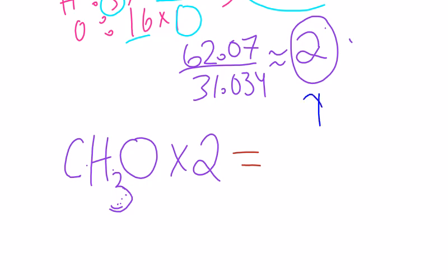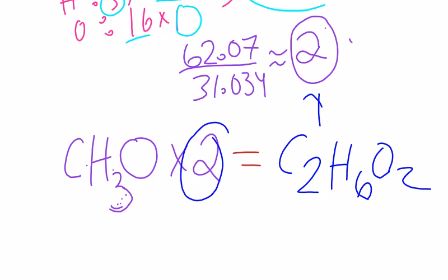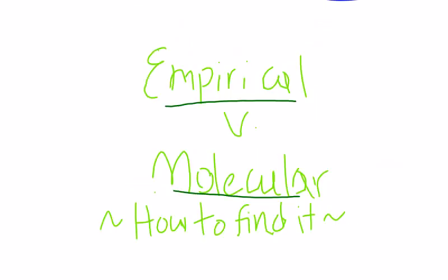Because dividing the molecular weight by the weight of the empirical formula gets us 2, we multiply 2 by the empirical formula to get C2H6O2 as the molecular formula. And so this would be our answer. I hope this video helped you to understand the difference between molecular and empirical formulas and how to find them.